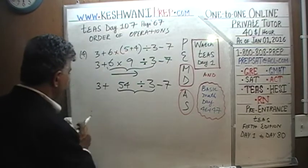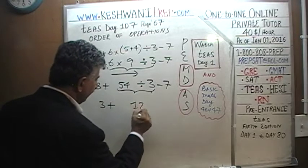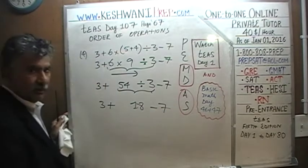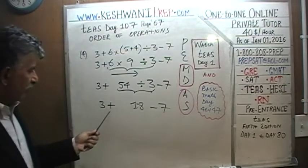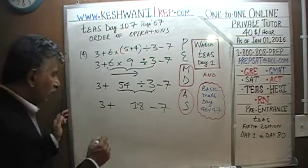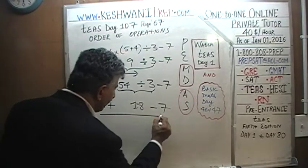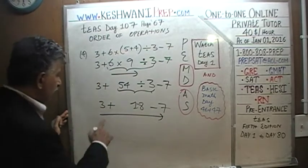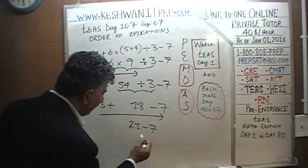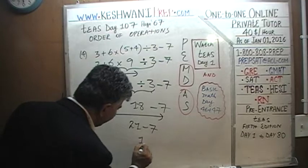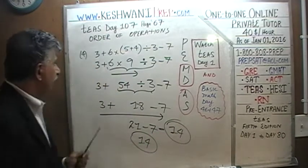So we have 3 plus 18 minus 7. We now have only addition and subtraction, so we go from left to right. 3 plus 18 is 21, and 21 minus 7 is 14. The answer is 14.